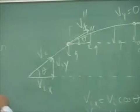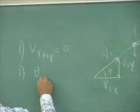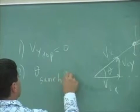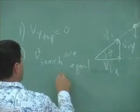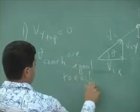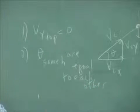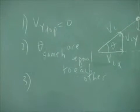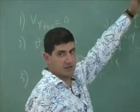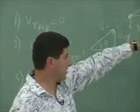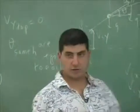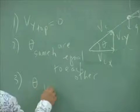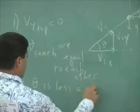Thetas of same height are equal to each other — we're trying to make some generalizations so we can see the general behavior of projectile motion. Another generalization: the higher the height, the less the angle is, and the less the height, the greater the angle. So theta decreases as h increases.